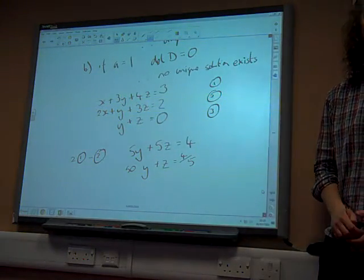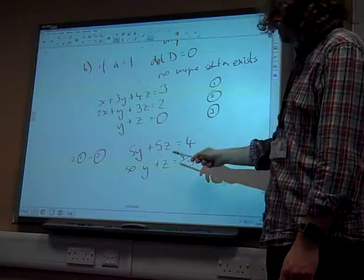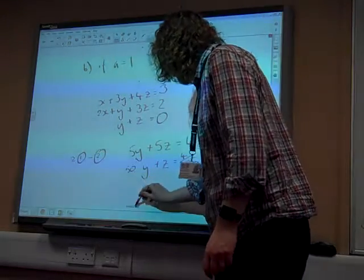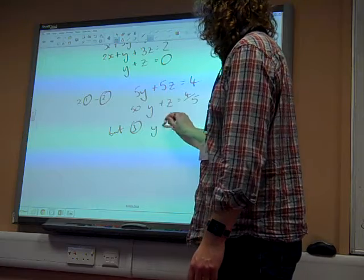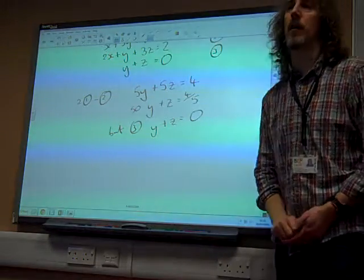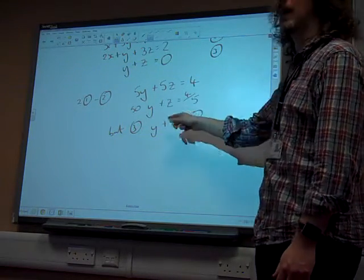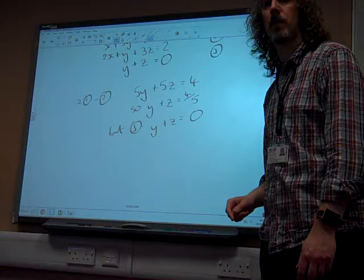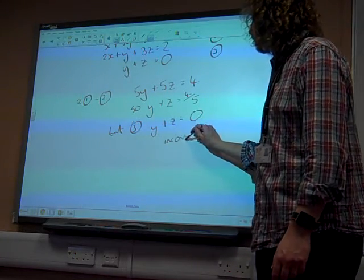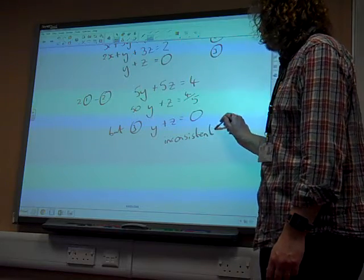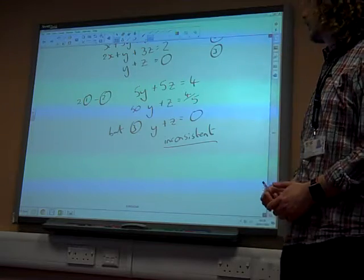Oh, that's brilliant, isn't it? I've got my inconsistency. That equation, combining 1 and 2, gives me y plus z is 4 over 5. But equation 3 says y plus z is equal to 0. There is no way that y plus z can be both 4 over 5 and 0 at the same time. That's inconsistent. There we go. And so I've decided that my equations are inconsistent. And that's it.